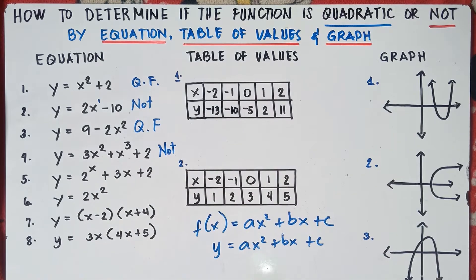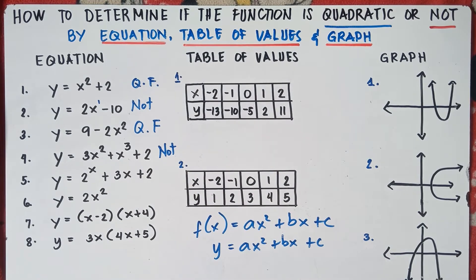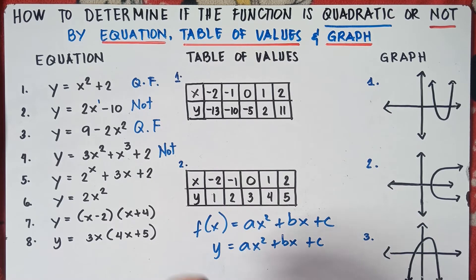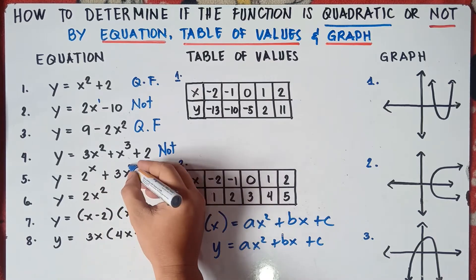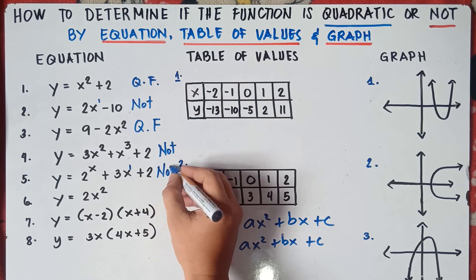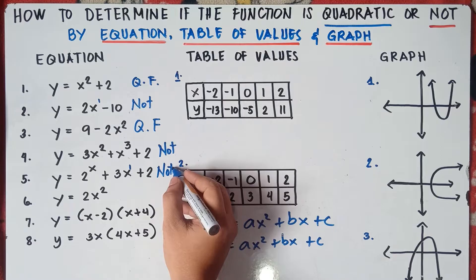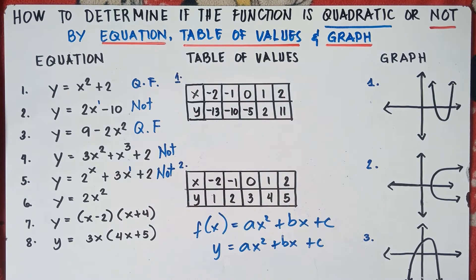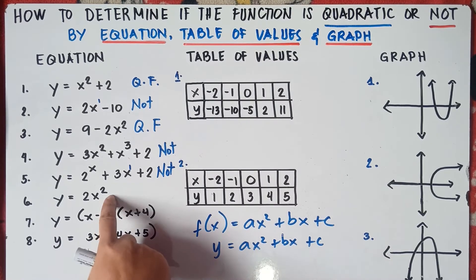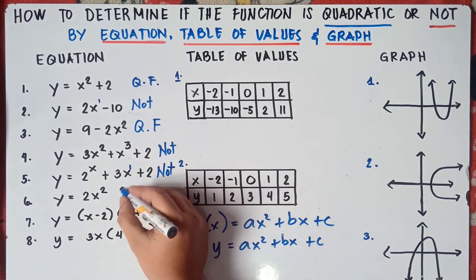How about number 5, class? Check number 5 — what's the highest exponent? That's 1, and the other one, the exponent is x. Therefore, this is not a quadratic function. How about number 6? You don't have the value of b and c, but you have the exponent of 2. Therefore, this is a quadratic function.